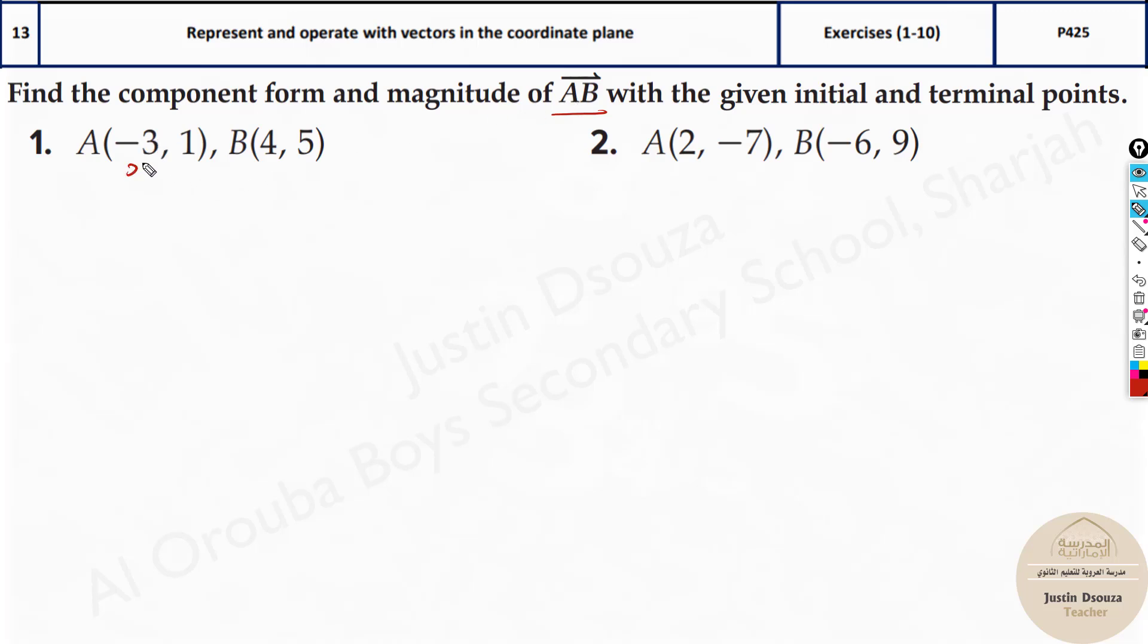So first thing what you need to do is write x1, y1 to the initial point and the terminal point write x2, y2. Same way over here you can follow it.